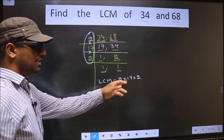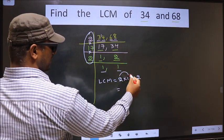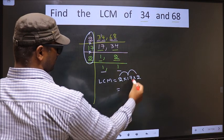Now, let us multiply these numbers. 2 times 17 is 34, times 2 is 68.